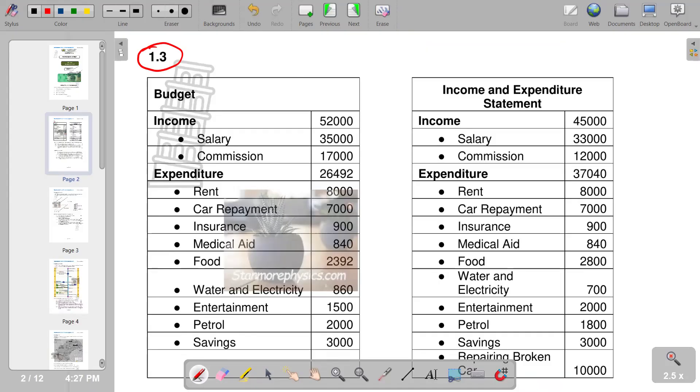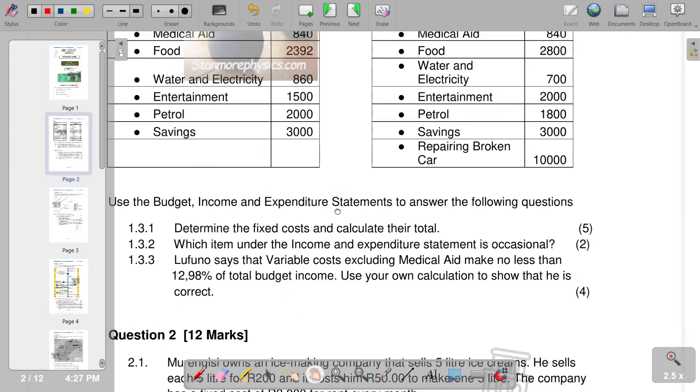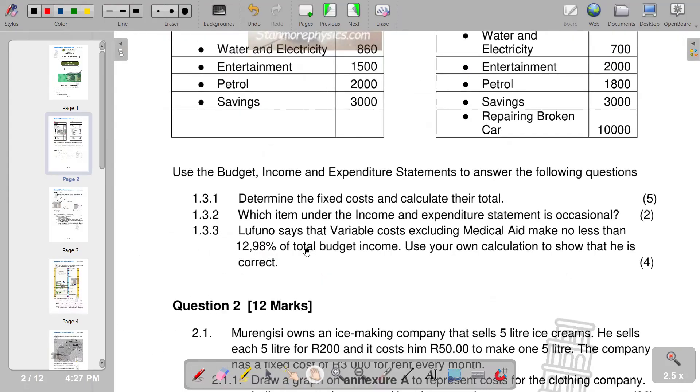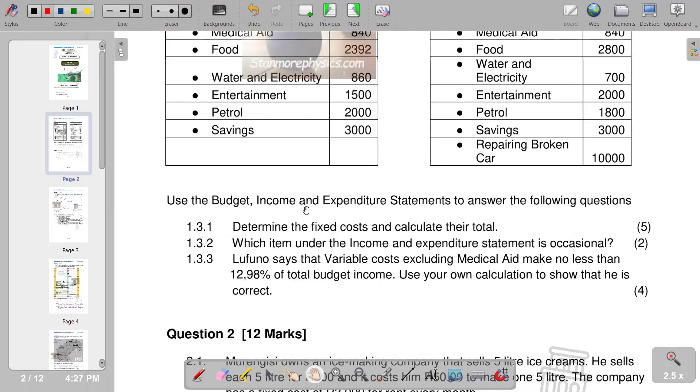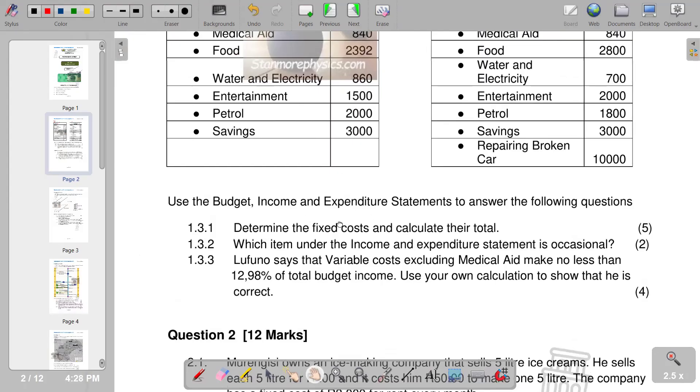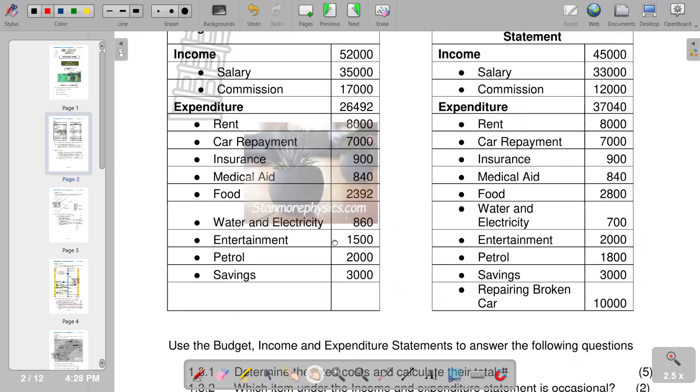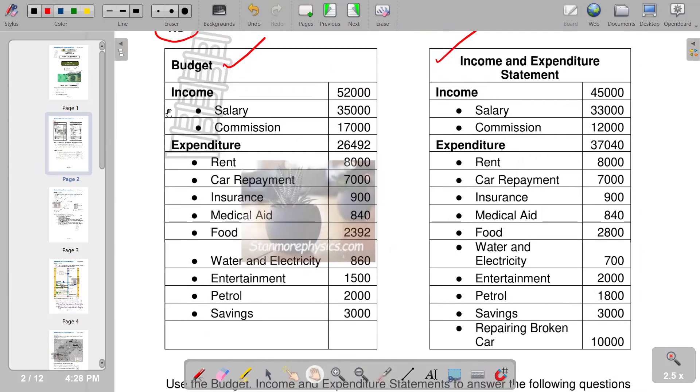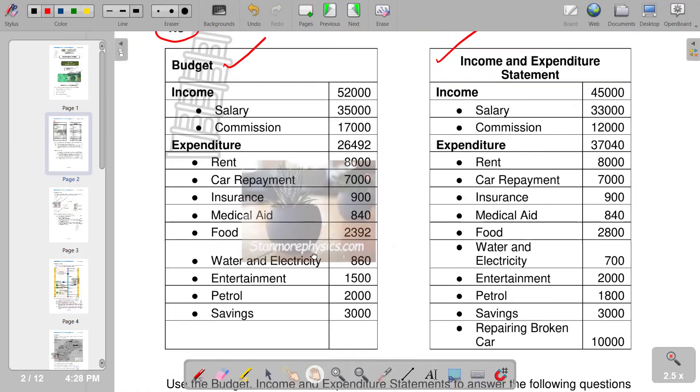Question 1.3. We are given a budget, an income and expenditure statement. Going down, you see that you also have our question part. The first part: determine the fixed costs and calculate their total. So we have got five marks on that part. We have to identify the fixed costs that we are given in the budget that we have there.